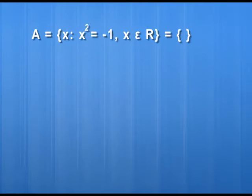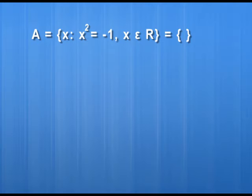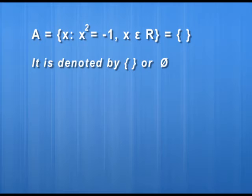By now we have learnt what are sets and two methods to represent a set. Using the rule method, let me discuss one more set. Set A is defined as the set of all x such that x² = −1 and x belongs to the real numbers. We have to find the elements belonging to this set. Is there any real number whose square is −1? No, there is no real number whose square is −1. So we cannot write any number here using the roster method. This is a set having no element, known as an empty set, and the empty set is denoted by the Greek letter phi (∅).